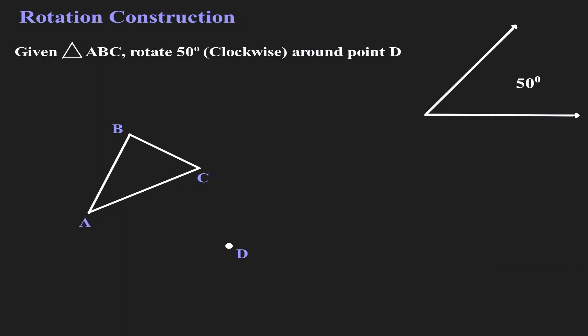Welcome. Let's talk about the construction for rotation. We are given the central rotation at point D, and what we want to do is get triangle ABC and rotate it 50 degrees in a clockwise direction. Here on the right-hand side we have the measurement for 50 degrees.